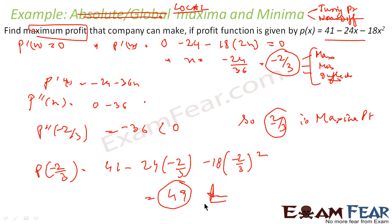That is the maximum profit the company can make — 49. Here also we found the critical point x = -2/3, used p''(x) to confirm it is a maxima since p''(-2/3) = -36 < 0, and then computed the function value to get the maximum profit.